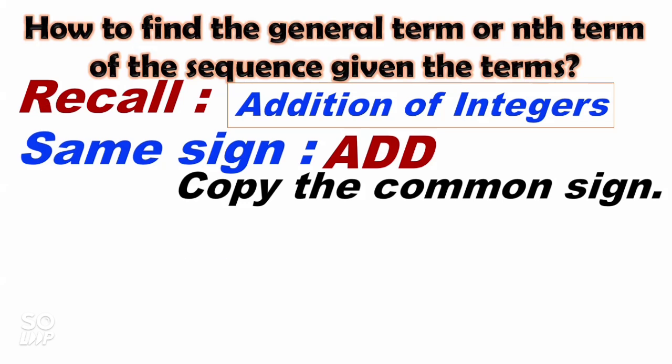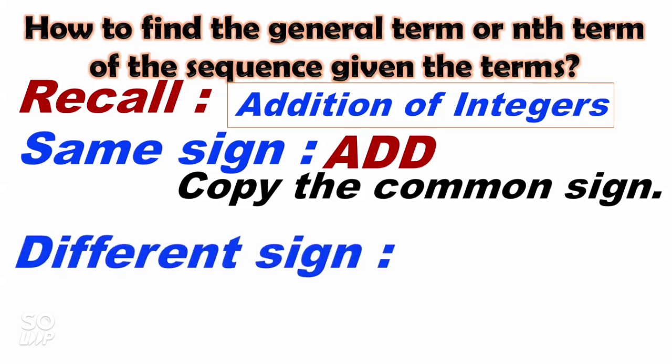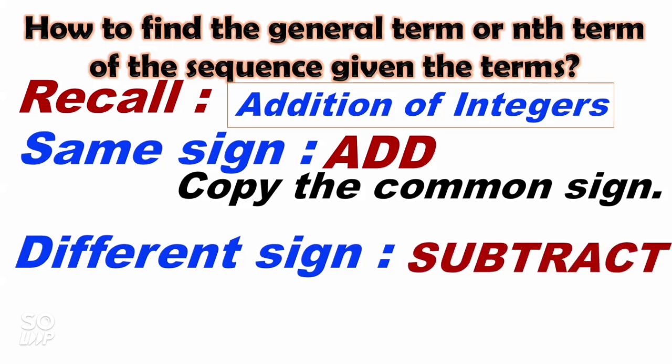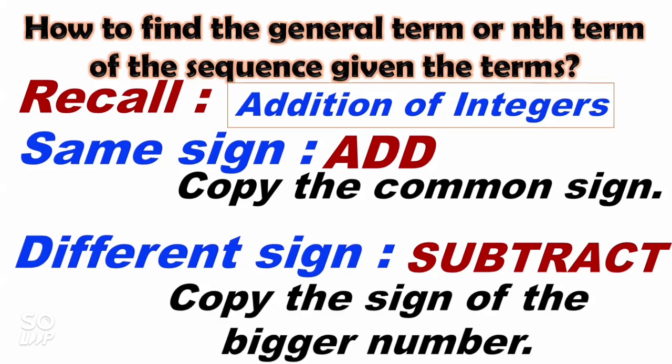Next, different sign. When the integers have different signs, we subtract them. Then copy the sign of the bigger number — copy the sign of the number with the higher value.